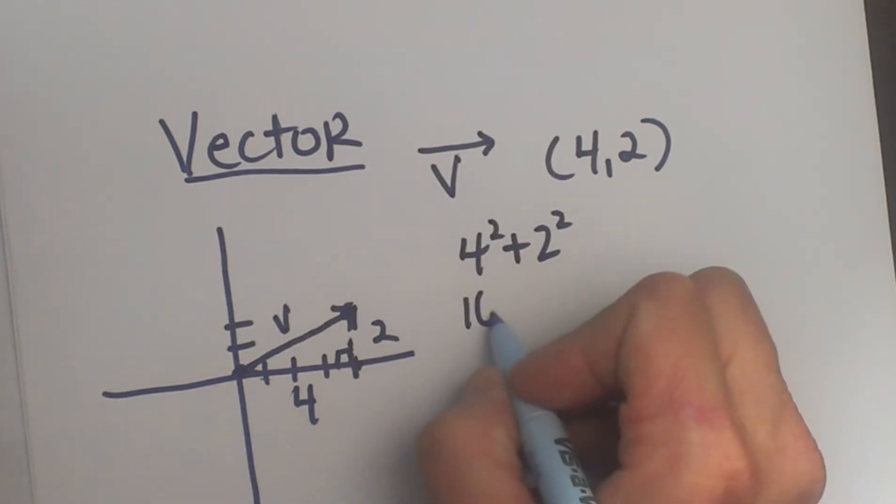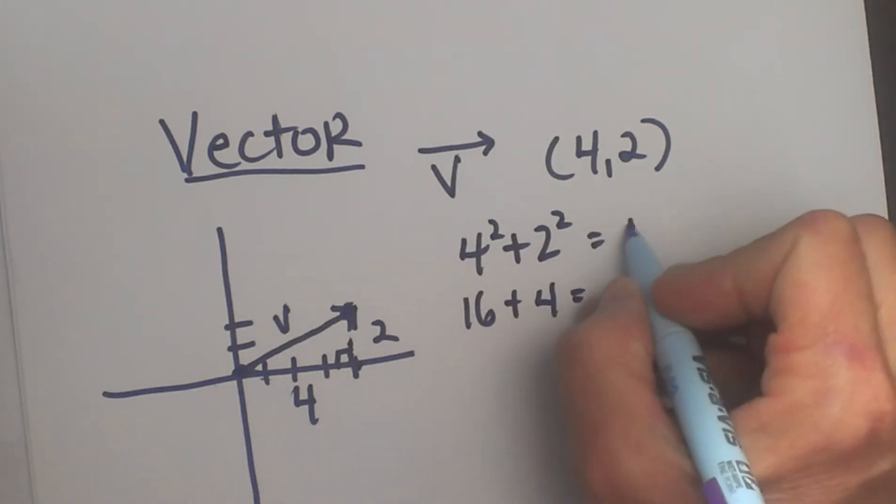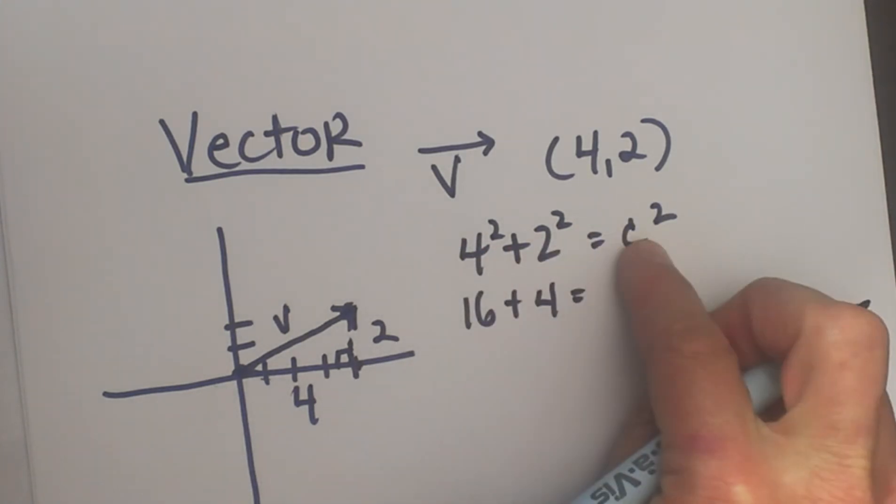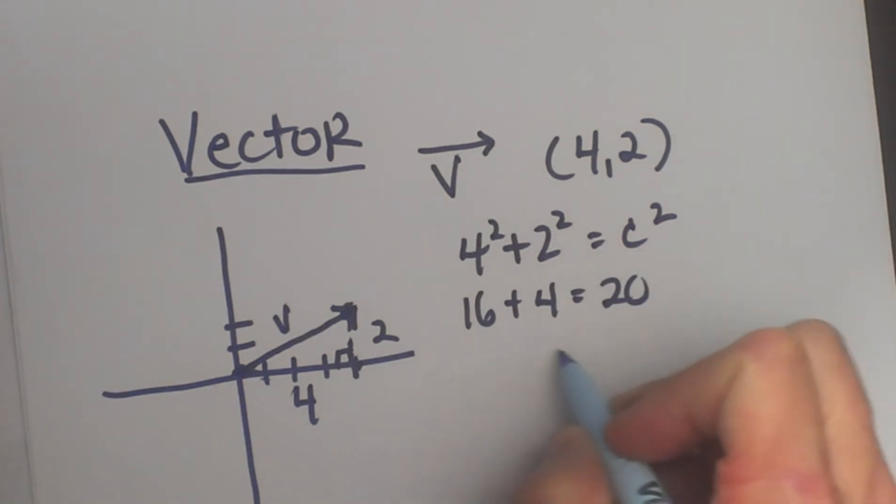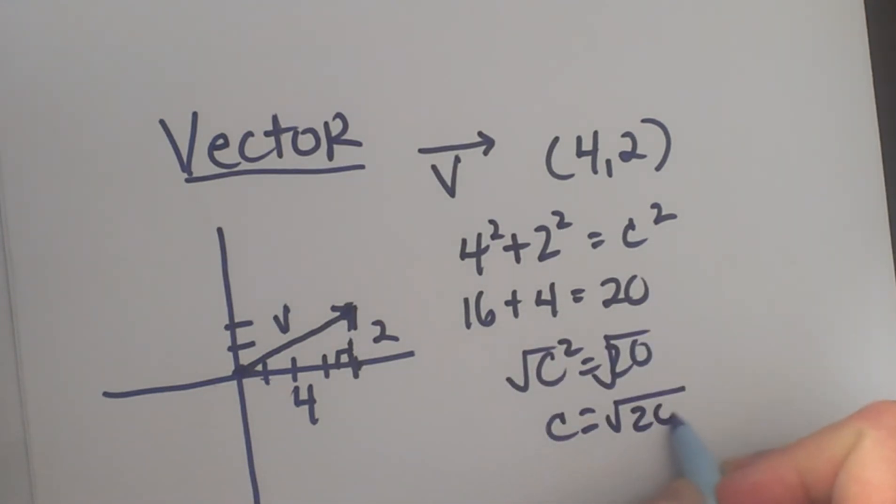So 16 plus 4 equals C squared. A squared plus B squared equals C squared, which equals 20.